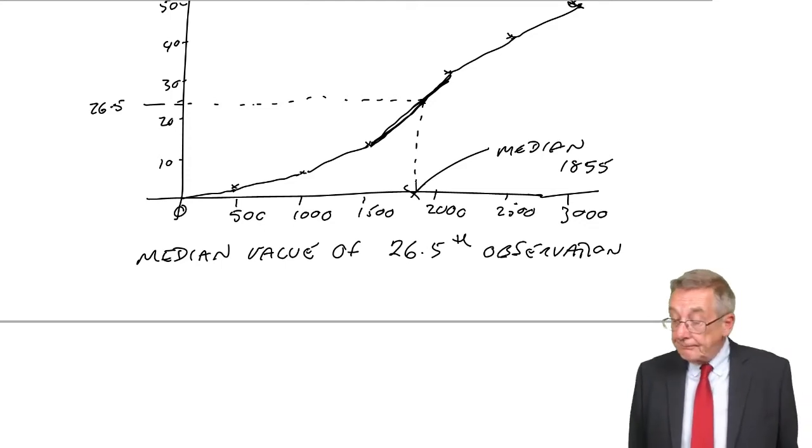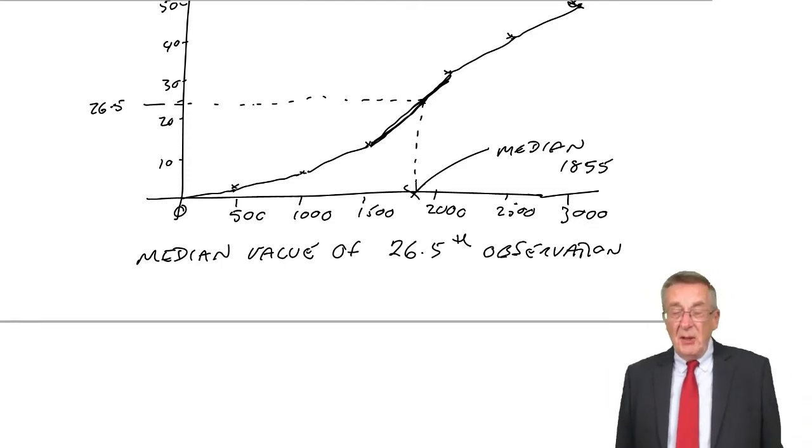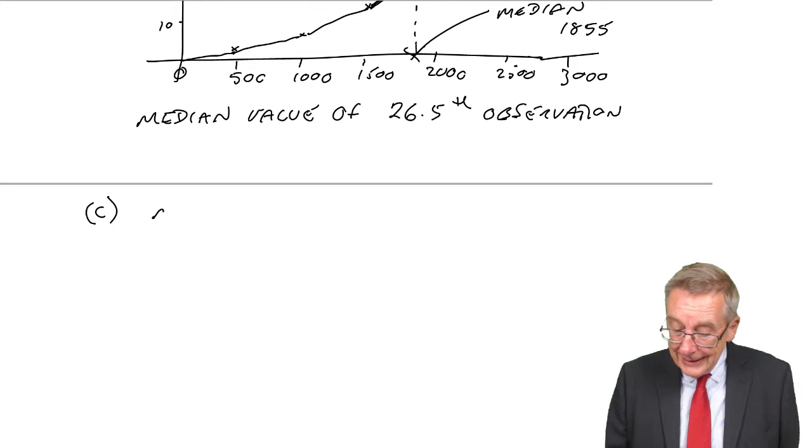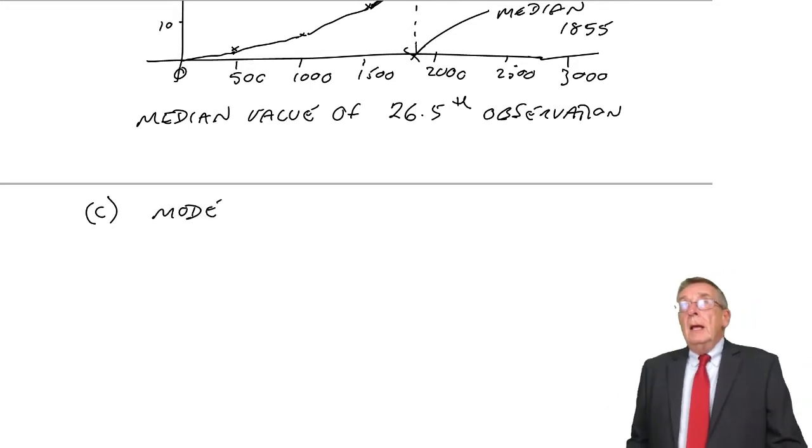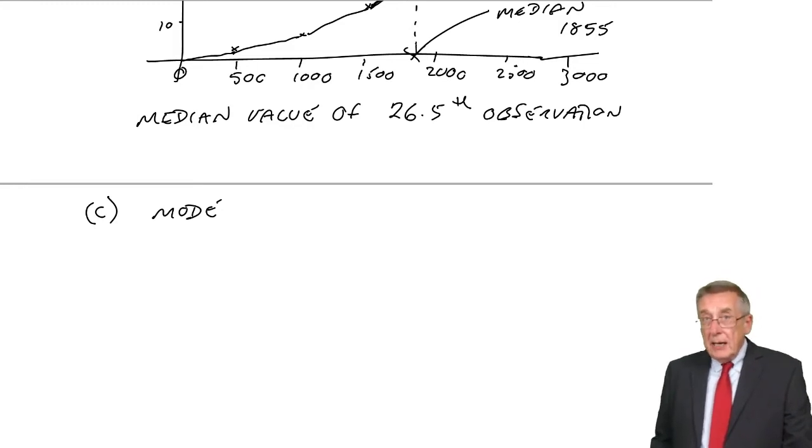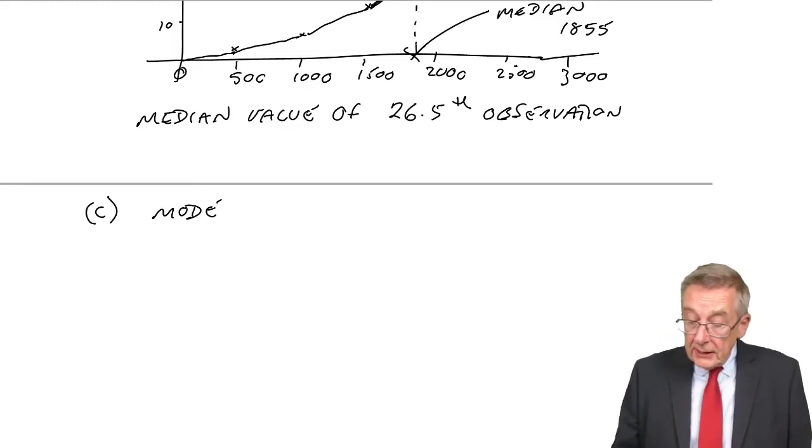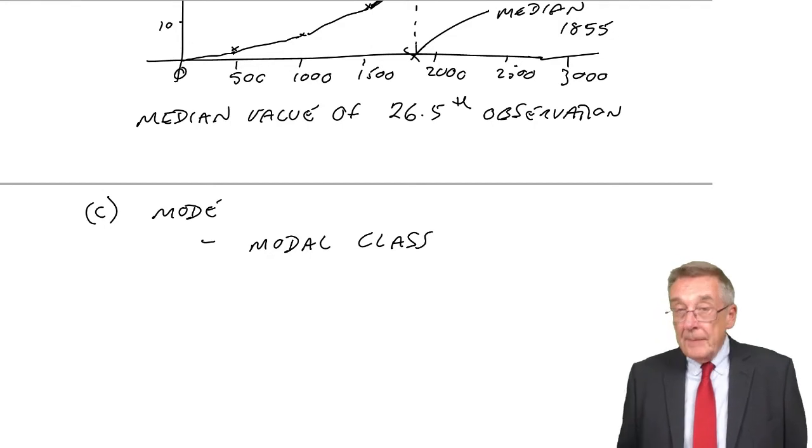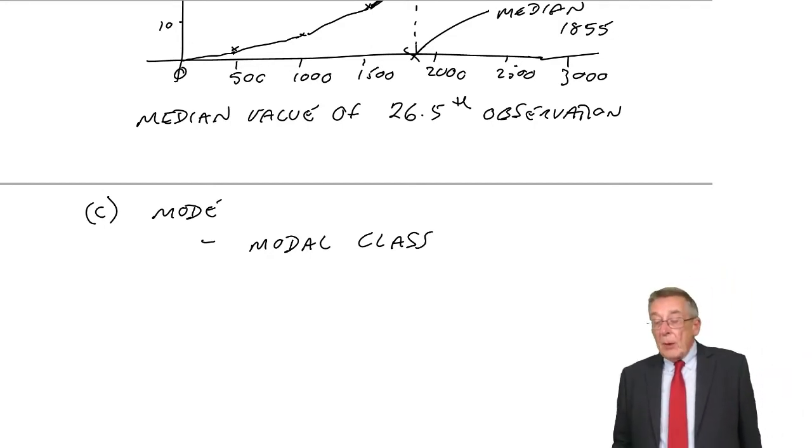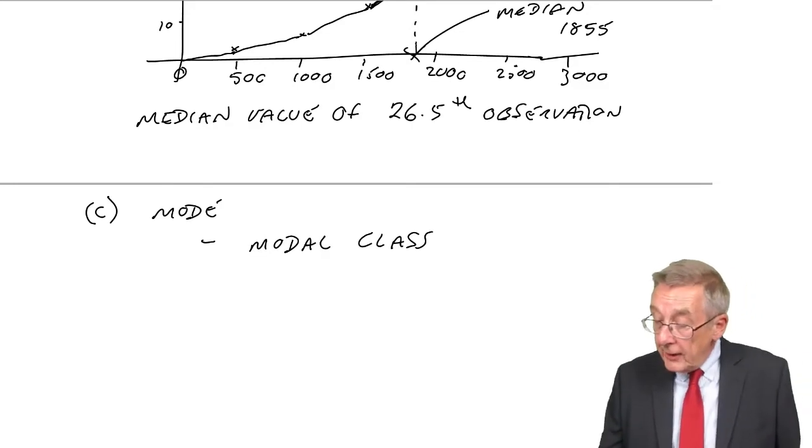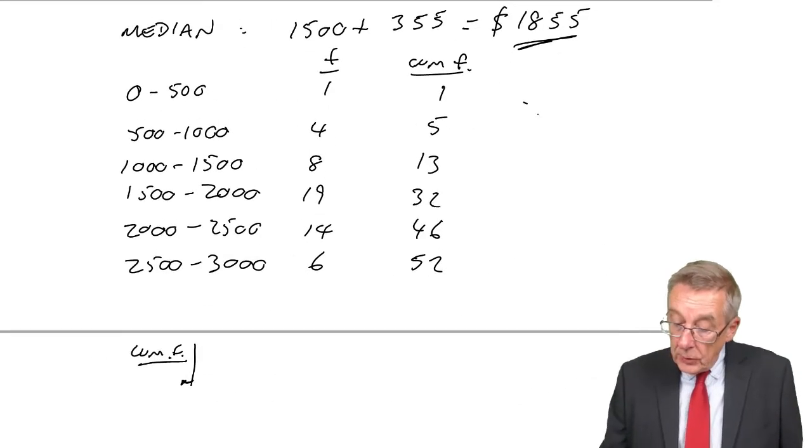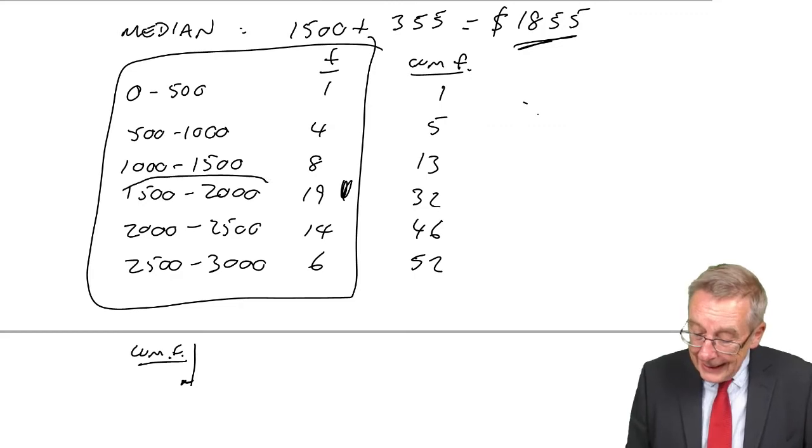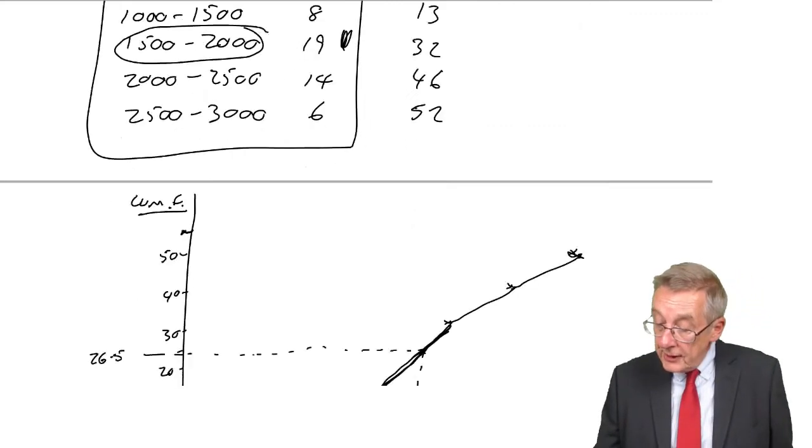So, a bit messy, sorry. Of the three, it's the only one that really is messy. Because the final one, the mode. I remember, I said it was the most frequently occurring observation, but certainly in your exam, you can only be asked for the modal class, or group, which is easy. It's the most frequently occurring group. And if you look at the original table, which is the most frequently occurring? Well, it's 19. It's the range, the group, 1,500 to 2,000.